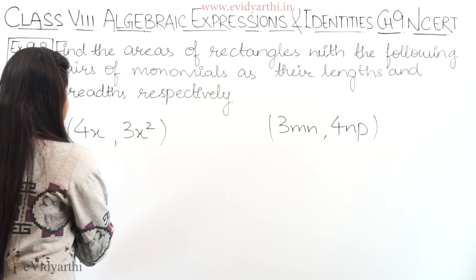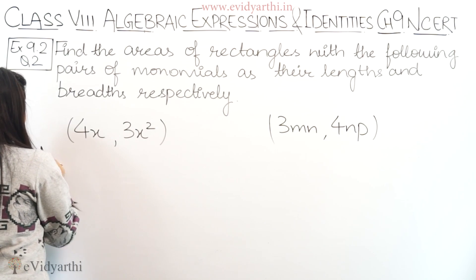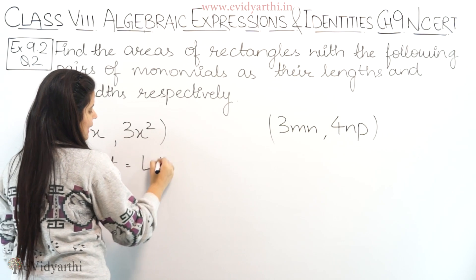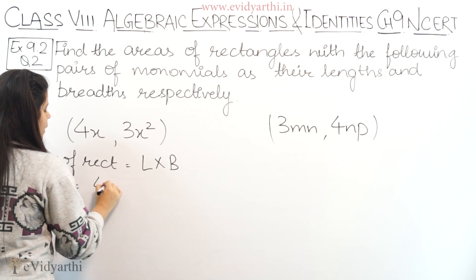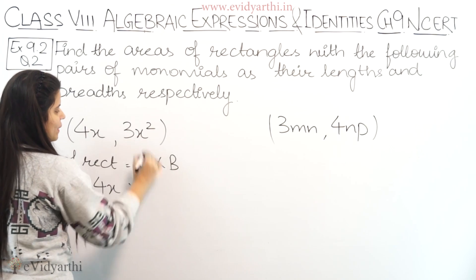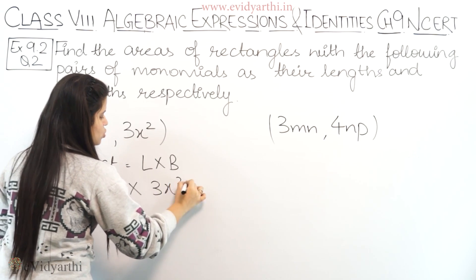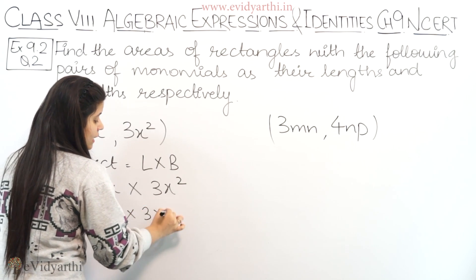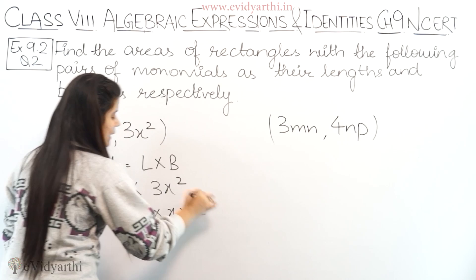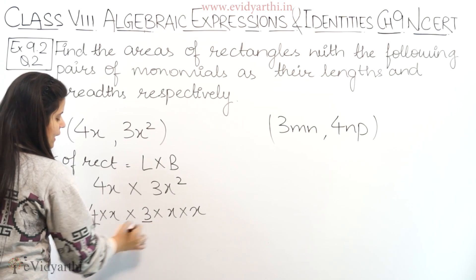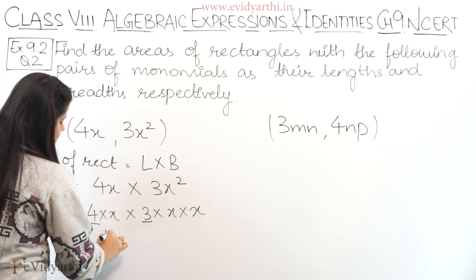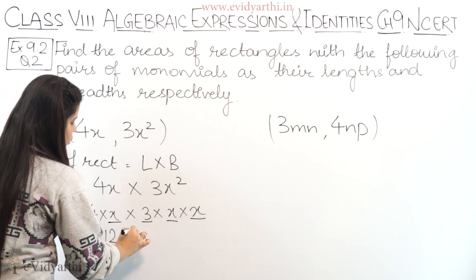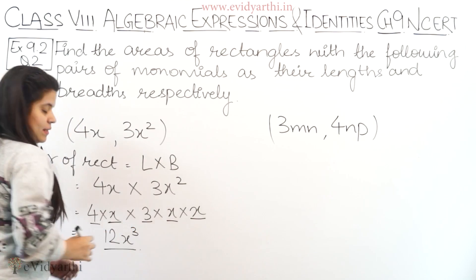Now the next part: we have 4x and 3x². Area of rectangle equals length into breadth, so 4x into 3x². This is 4 into x into 3 into x², which means x appears 1 plus 2 equals 3 times. 4 into 3 is 12, so the answer is 12x³.